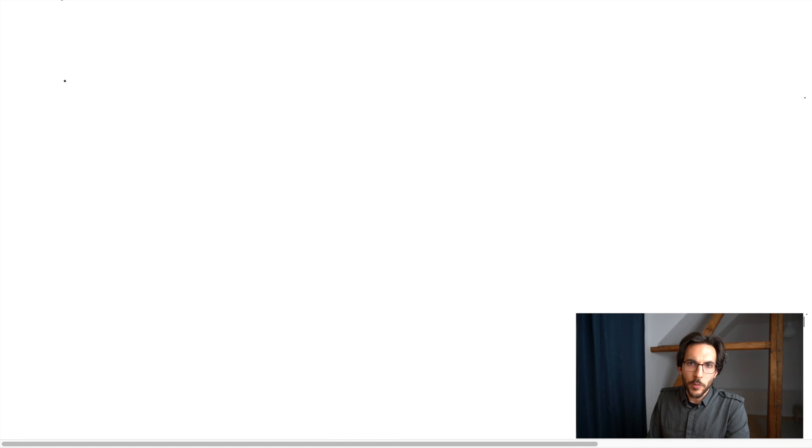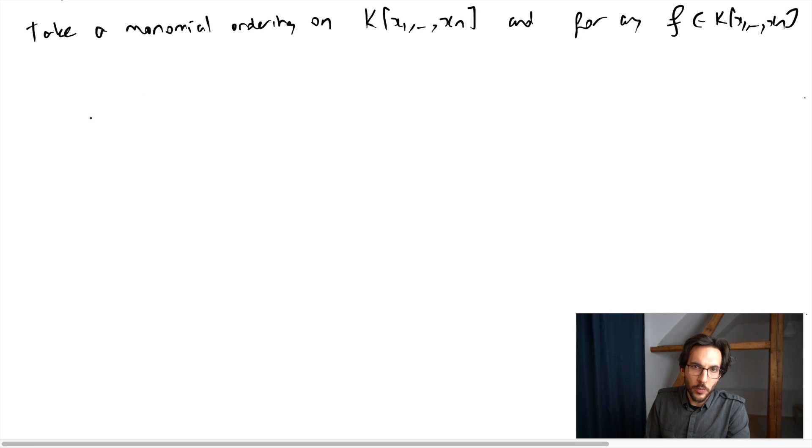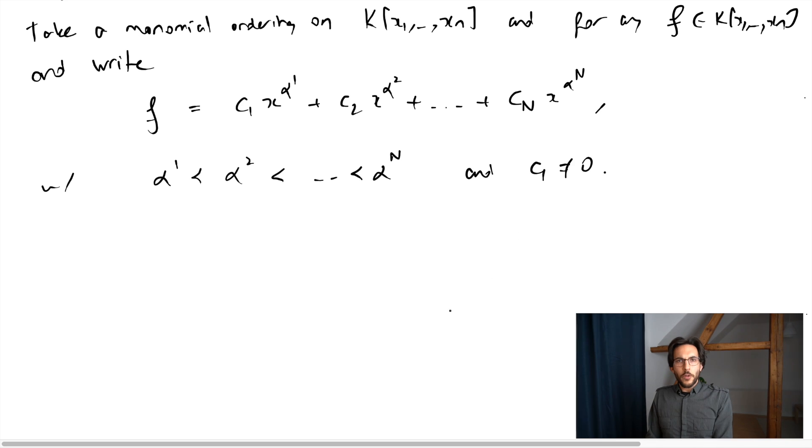What we are accustomed to do for univariate polynomials is to write a polynomial as sum of monomials of decreasing degree. And now we can do the same thing if we have a monomial ordering on a multivariate polynomial ring. So take a monomial ordering, and for any polynomial, we're going to write it as a sum of monomials of decreasing size. So if you do this, writing the polynomial as a decreasing sum of monomials, we're going to define the leading monomial of f to be this first term appearing here.